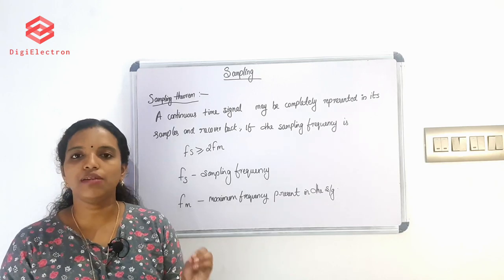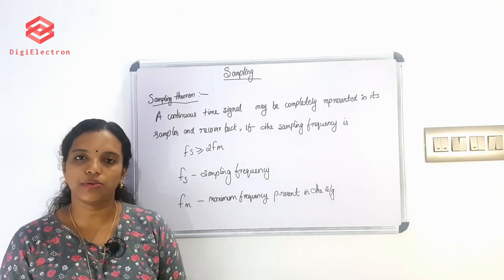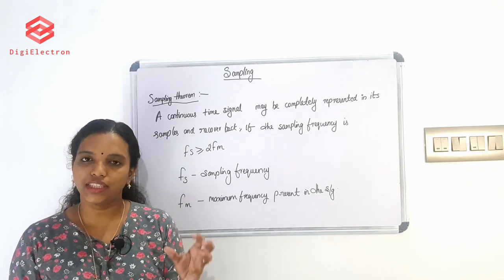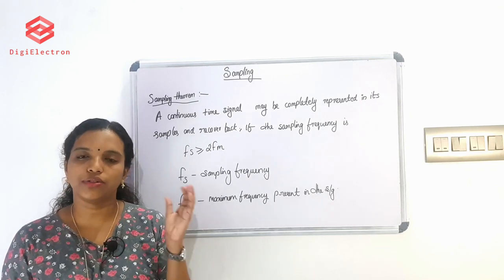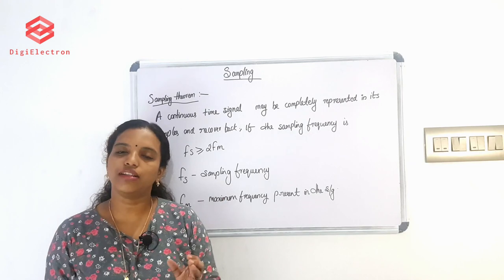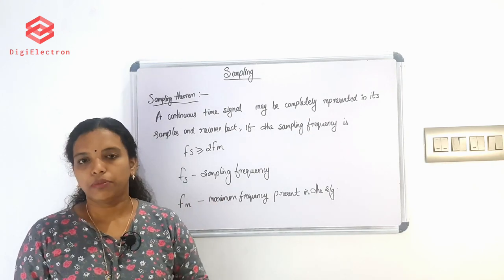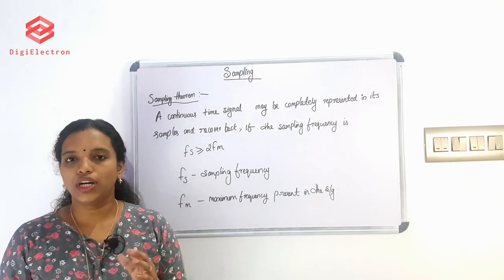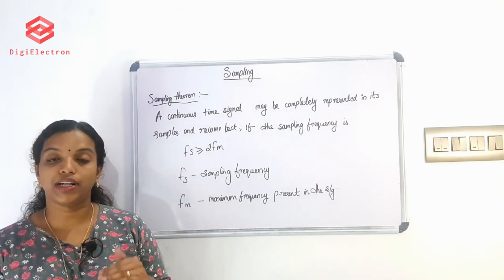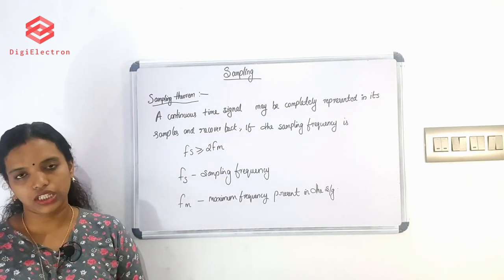In digital modulation techniques, we use carrier signals. The message signal is a continuous signal. We use pulse-formula carriers — these are the EUR-type carriers used in digital modulation.